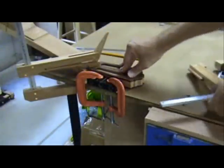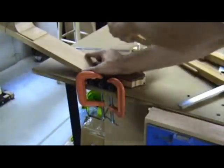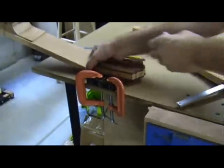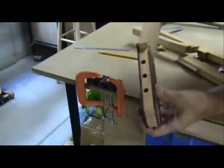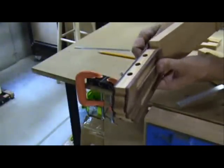After all three holes are drilled on one side of the neck, you can now release the clamps and check to make sure you've drilled deep enough. You can do this by placing the tuners into the holes and make sure that they are seated completely.